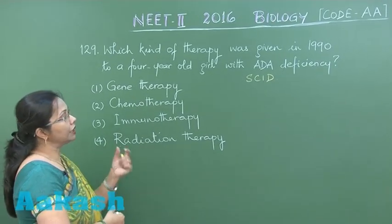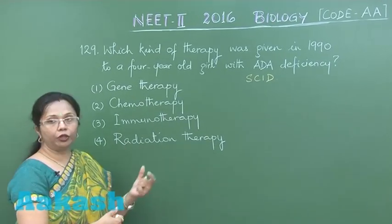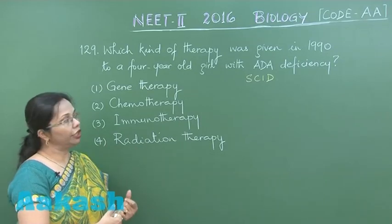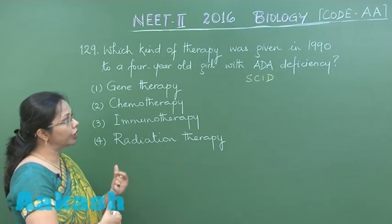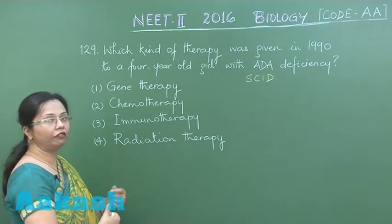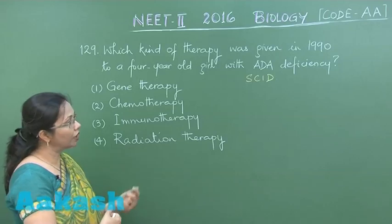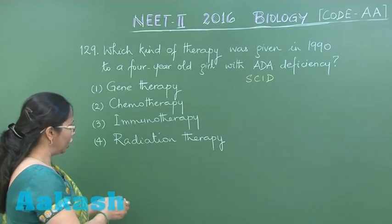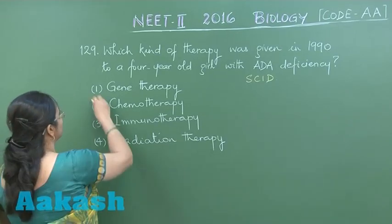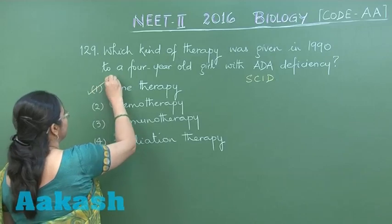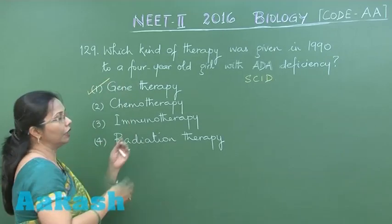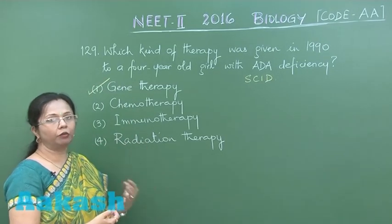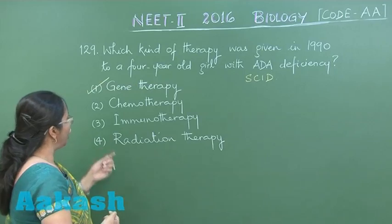In this case, the correct copy of the ADA gene was introduced into the T cells and they were then infused back into the body. Such treatment is called gene therapy, where a deleterious gene is substituted by the correct copy of the gene.